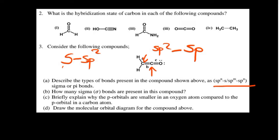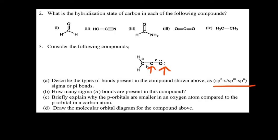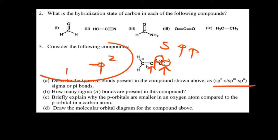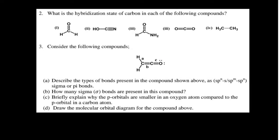Finally, for the last bond between carbon and oxygen: the carbon has already been identified as sp hybridized. For the oxygen, we count its lone pairs together with its other connections — that gives us 1, 2, 3: s, p, and p — so the oxygen is sp2 hybridized. The bond therefore involves overlap between the sp hybridized orbital of the carbon and the sp2 hybridized orbital of the oxygen atom.